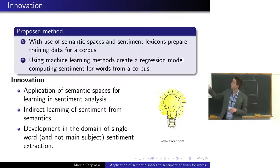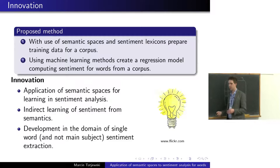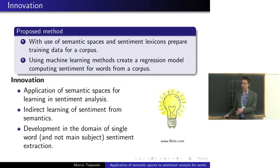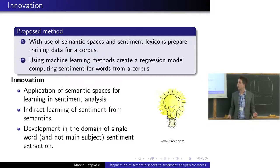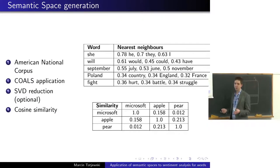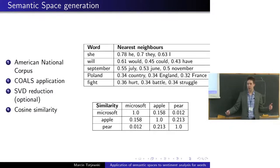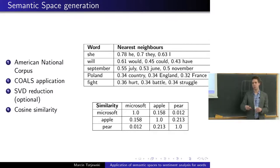My method takes words from a sentiment lexicon that have assigned sentiment values, gives them attributes from semantic space, and feeds that into machine learning regression models to obtain a function that will assign sentiment to whatever word I want. I needed a sentiment lexicon — not a binary one, but one with a broader distribution of values — so I could say that in one corpus something is less negative than in another, rather than just positive or negative.